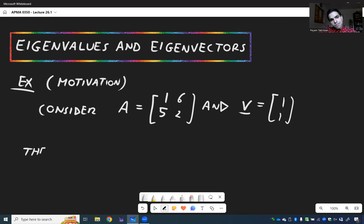And let's see what happens if we apply the matrix A to the vector V. So then, AV, that is 1, 6, 5, 2, applied to 1, 1.